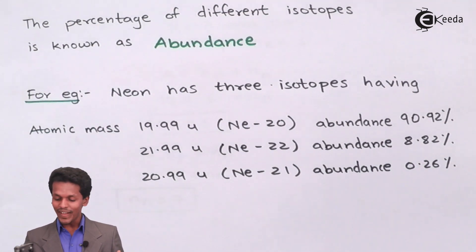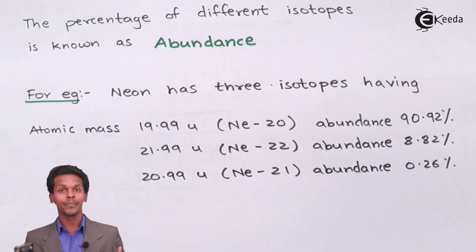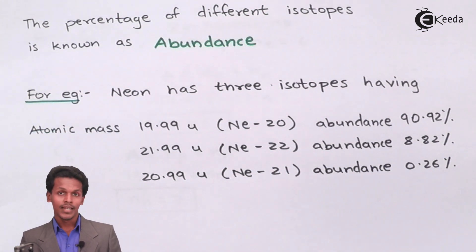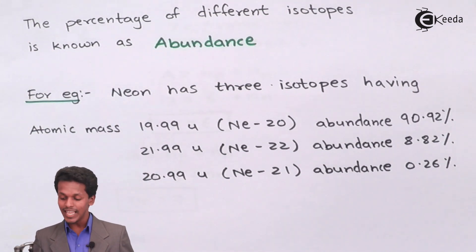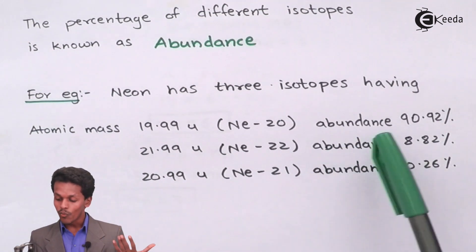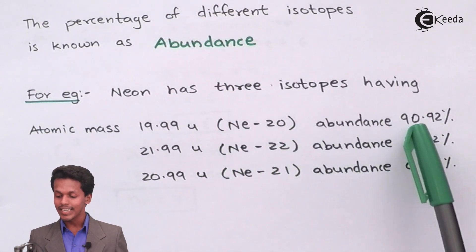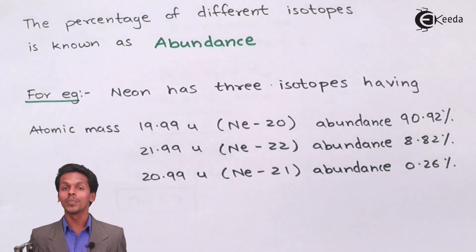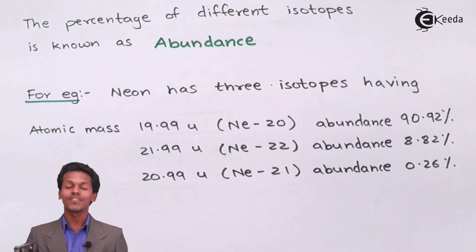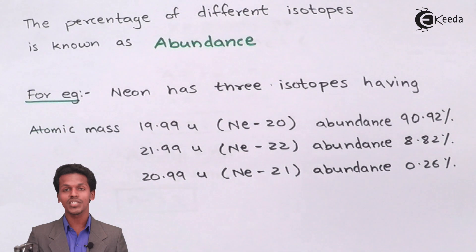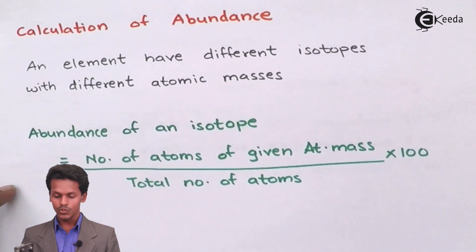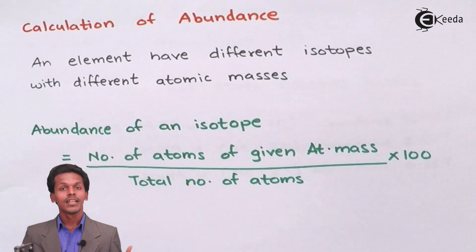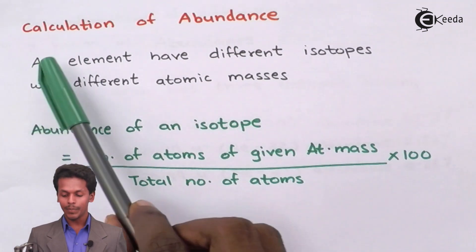These kinds of isotopes are present in nature, and among them we can calculate why neon-20 has 90.92% abundance. There is a straightforward calculation we can do, because it is easy to calculate the abundance for an element that has different isotopes with different atomic masses.